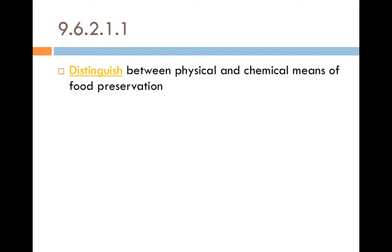We're going to be looking at dot point 9.6.2.1.1, which is to distinguish between physical and chemical means of food preservation. It's very important that we understand and distinguish between whether it's physical or chemical food preservation.